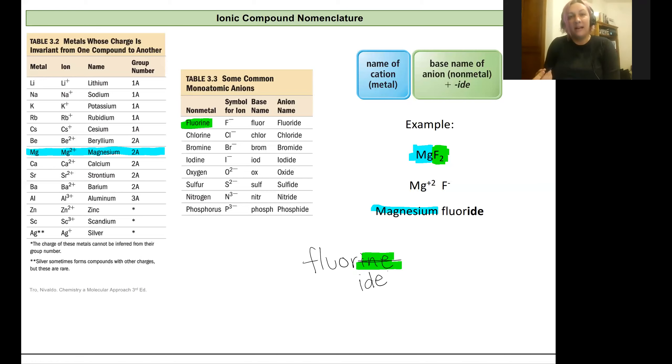I'm going to replace it with an I-D-E ending. And so all of my anions when I name the full compound will have that I-D-E ending and that will indicate to my readers that I'm talking about an ionic compound. So that fluorine becomes fluoride and I'll write those next to each other as two separate words. And that's my name for my ionic compound.